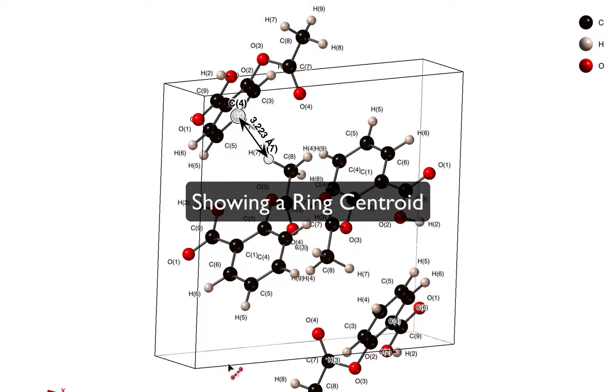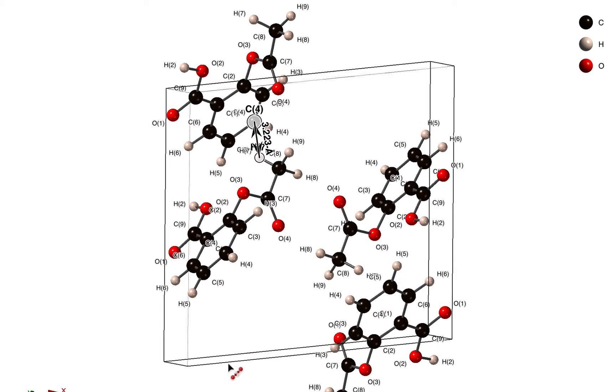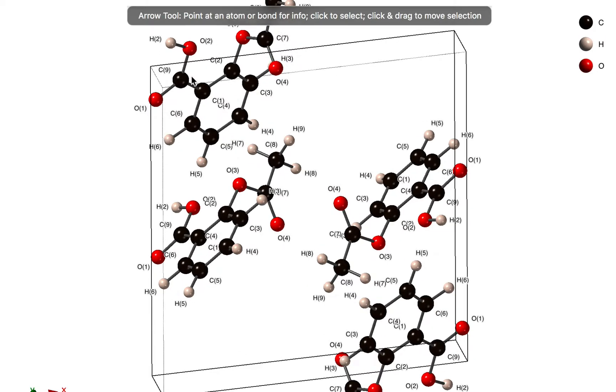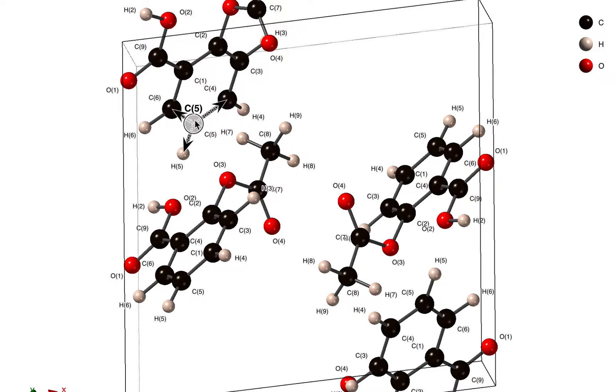Now let's suppose that we're not interested in distances from this hydrogen atom and individual carbon atoms. Maybe we want to measure the distance between this hydrogen atom and the center of this ring. How do we do that?